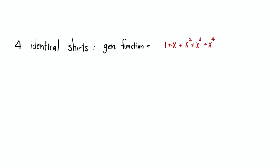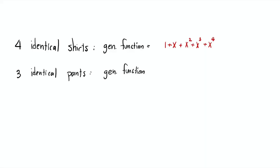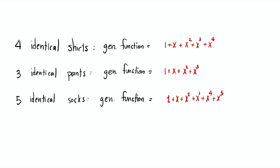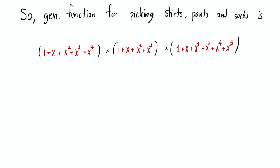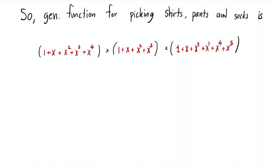To find the generating function for each variable: for shirts (x₁ ≤ 4), it's 1 + x + x² + x³ + x⁴; there's one way to pick 0 through 4 shirts, but zero ways to pick 5 or more. For pants (x₂ ≤ 3), it's 1 + x + x² + x³. For socks (x₃ ≤ 5), it's 1 + x + x² + x³ + x⁴ + x⁵. Now that we have three generating functions for x₁, x₂, x₃, the number of combined ways has a generating function equal to the product of these three, which a calculator or computer can compute.